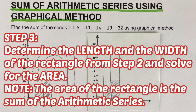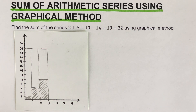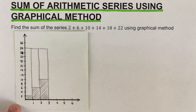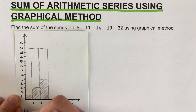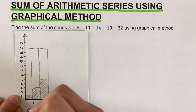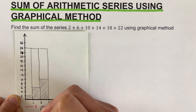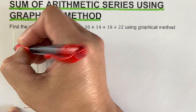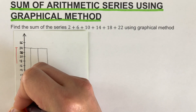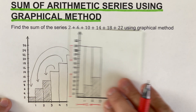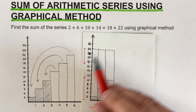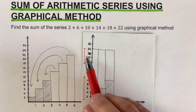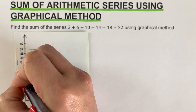The third step is to determine the length and width of the rectangle formed in step two and solve for the area. Remember that the area equals the sum of the series. Looking at the stacked graph, the length is half of 6, which is 3. The width is 24, because the first term 2 and the last term 22 were stacked together: 2 plus 22 equals 24.